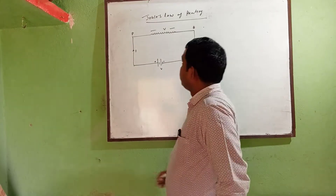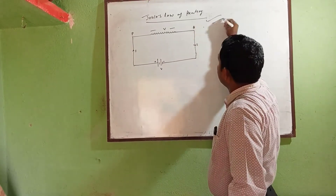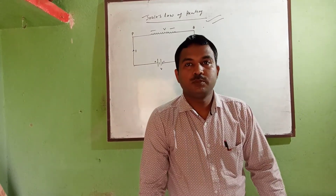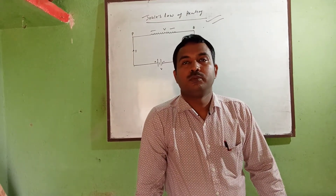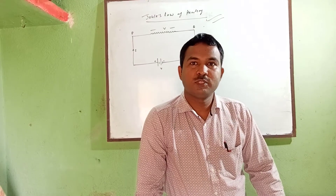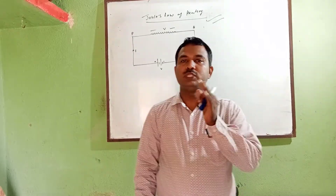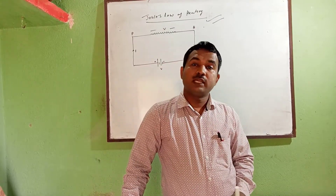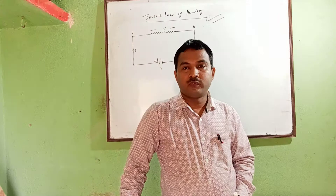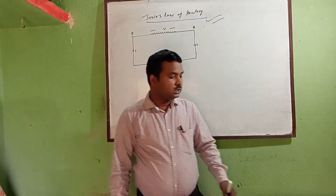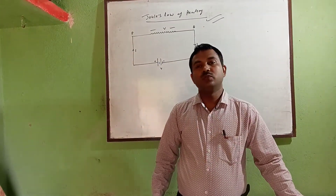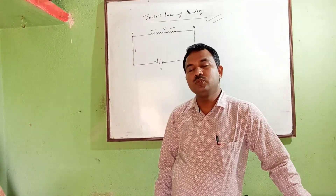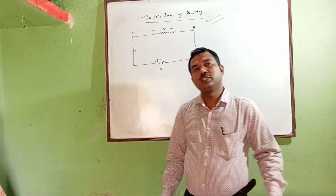Today we have the topic: Joule's Law of Heating Effect of Currents. We know that when we use conductors — conductors are materials which can conduct electricity, which have a number of free electrons — like iron, copper, silver, and aluminum. These are the materials that you can use to flow electricity.